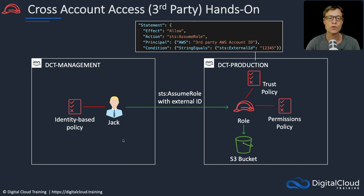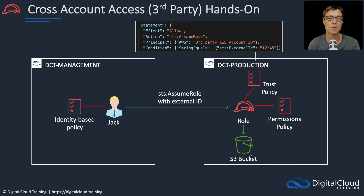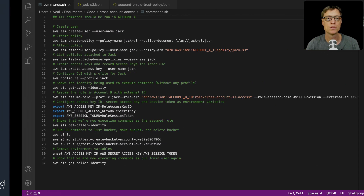We're going to create a user called Jack. He's going to have an identity-based policy. He's going to assume a role in DCT production with an external ID, and that role will have a trust policy and a permissions policy to allow him to access an S3 bucket. We've also got a bit of code to use.